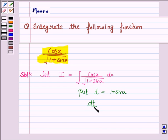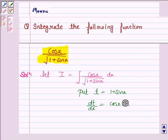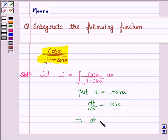So dt by dx is equal to cos x. We don't need to write dx here because derivative of sin x is cos x. So this implies dt is equal to cos x dx.